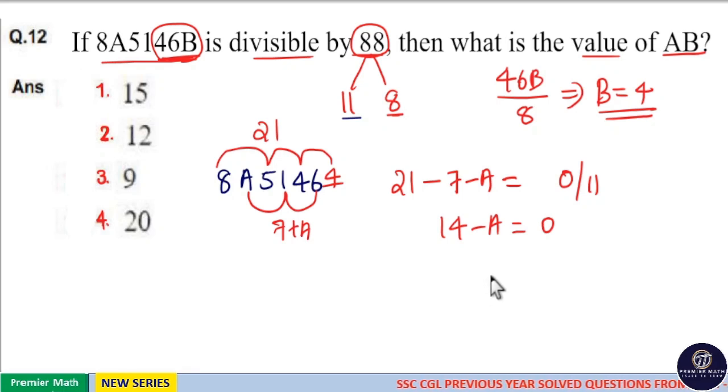If it is 0, then A equals 14. If it is 11, then A equals 14 minus 11, which is 3. So, A is 14 or 3.